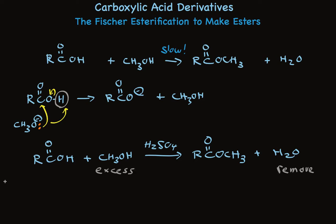Other acids can be used — para-toluenesulfonic acid, called tosic acid, is common, as is HCl. Both are very much like sulfuric acid. Other alcohols can be used, but because we need a large excess that is cheap and easily removed, this reaction is typically limited to methanol and ethanol, so we can make methyl esters and ethyl esters.